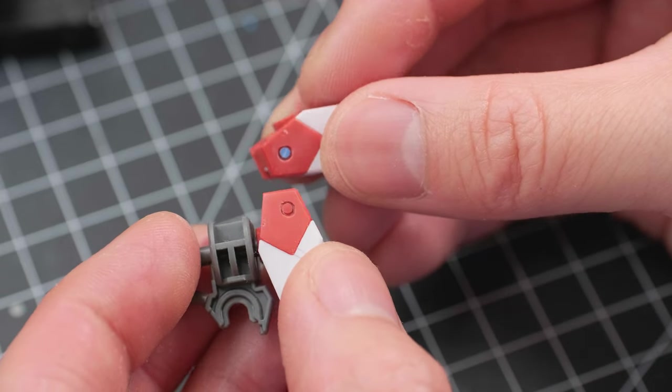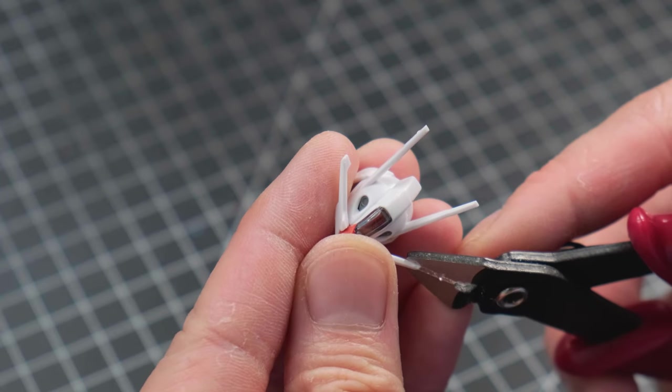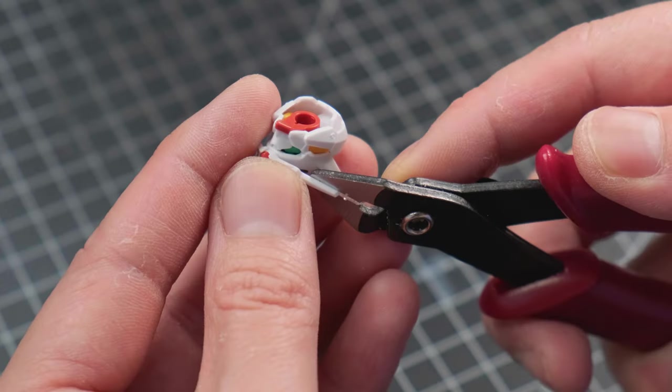Before I tend to the wings, let's first do some minor adjustments to the proportions of the kit. First up, sharpen the antenna a little bit.